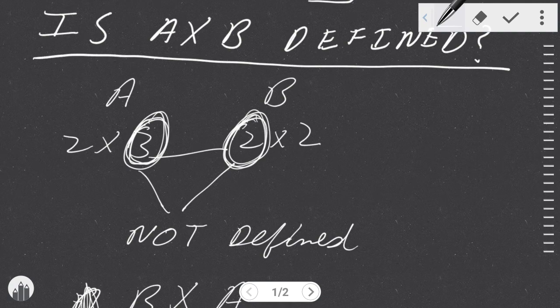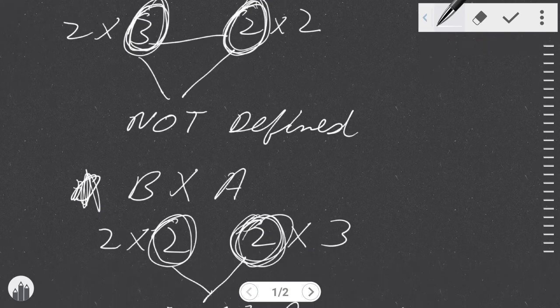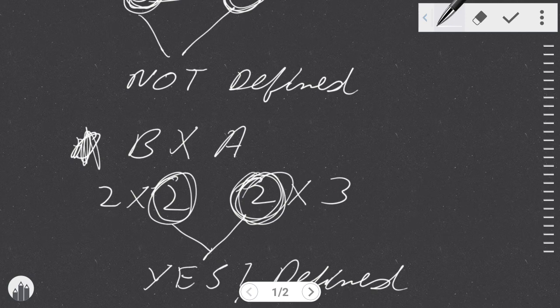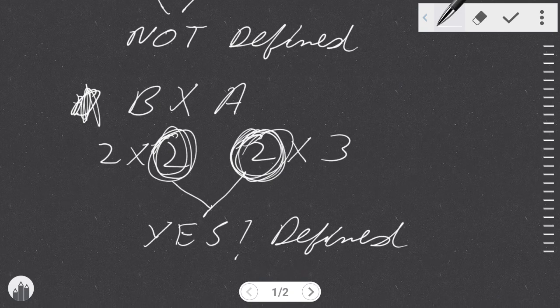Let's switch it back. Let's say if we were asked if B times A is a defined matrix or not. Well, in that case B has two by two, and A has two by three, but the middle terms are the same. So yes, they are defined by switching it back.